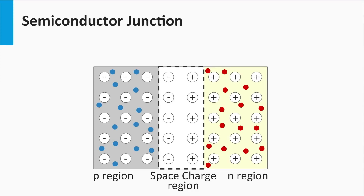The space charge region is depleted of mobile charge carriers. The left side of the space charge region, facing the p-type side, is negatively charged, whereas the right side, facing the n-type side, is positively charged. This results in an electric field across the space charge region directed from the n-type region to the p-type region. This field forces the minority charge carriers in the p-region — the electrons — to move to the n-region, and forces the minority holes in the n-region to move back to the p-region.